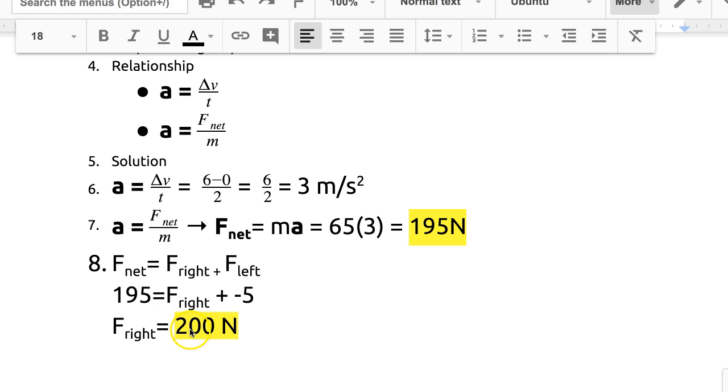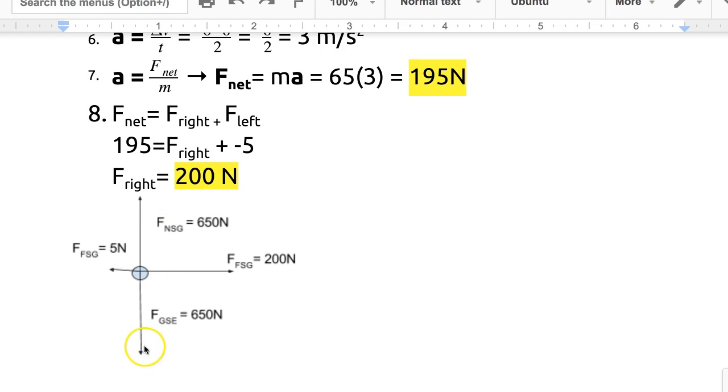Perhaps this will make a little more sense, too, when we look at the force diagram. Vertically, we know forces are balanced. The skater is not accelerating up or down. Motion is constant. Left and right, 195 newtons of net force, 5 newtons of friction opposing the motion.